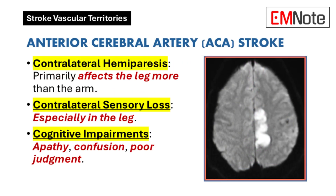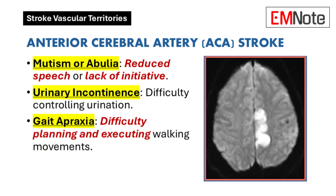Let's start with the anterior cerebral artery. Imagine a patient comes in with weakness, but it's mostly in their leg, not their arm. That leg weakness, especially if accompanied by difficulty walking, points towards an anterior cerebral artery stroke. You might also observe some cognitive changes — think apathy or confusion. The anterior cerebral artery supplies the frontal lobe, which is responsible for movement, thinking, and even bladder control. Damage here leads to those particular symptoms.